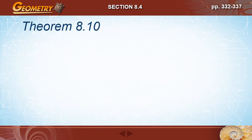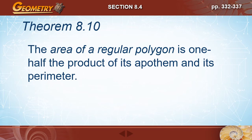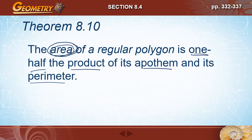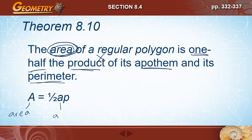Theorem 8.10 states that the area of a regular polygon equals one half the product of its apothem and its perimeter: A = ½ × a × P. Note that capital A is area and lowercase a is apothem.